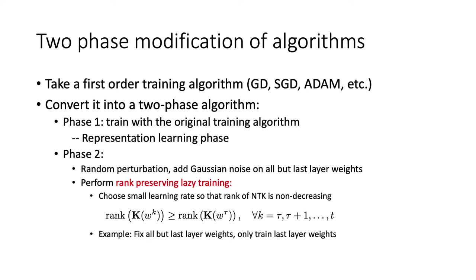So this is a more relaxed condition that includes the NTK training, where it practically doesn't change the kernel. And a special case of this is if you fix all the rest of the layers and only train the last layer in the second phase.